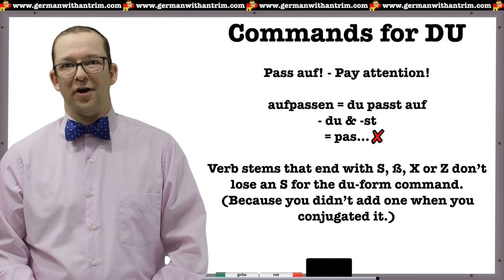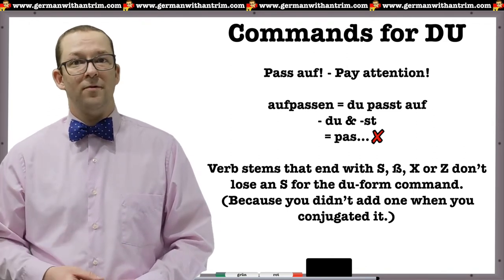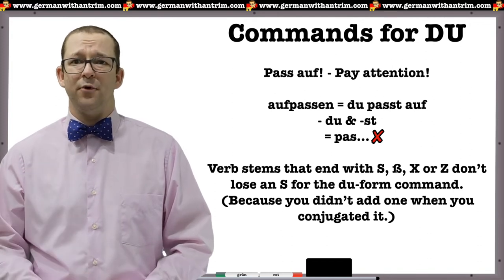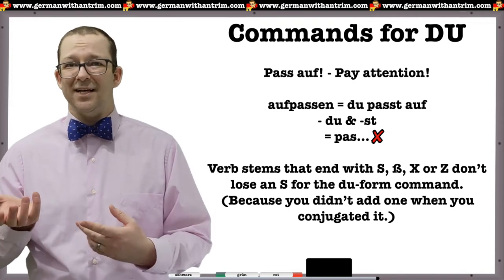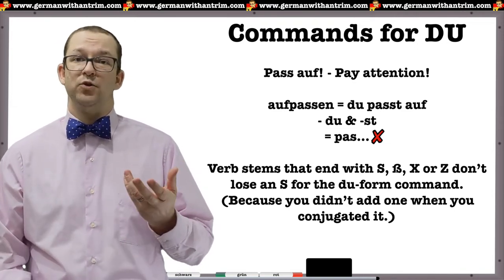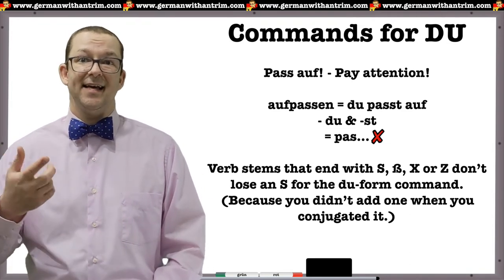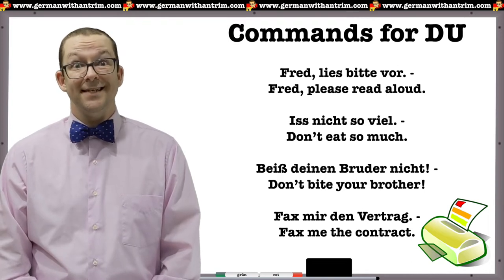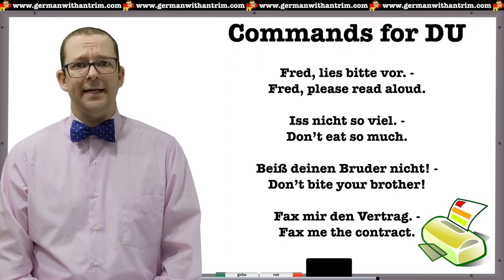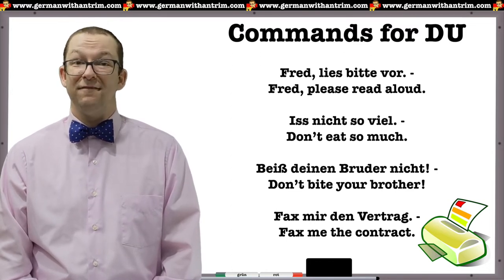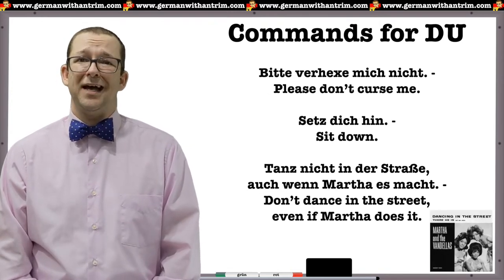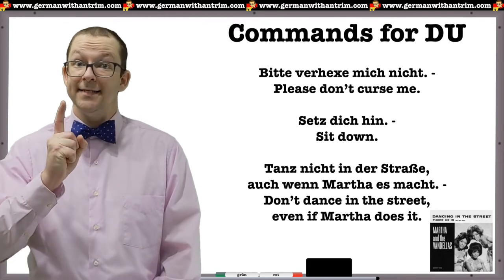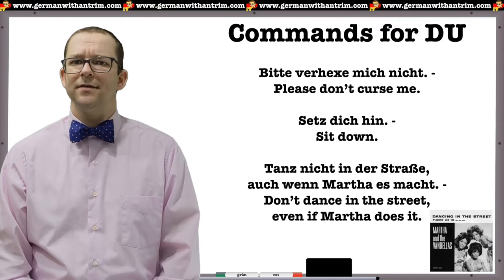In the example Pass auf, I showed another quirk. The verb is aufpassen; conjugated to Du it becomes Du passt auf. If you remove Du and ST you get Pass auf — but note both S's remain, because you didn't add an S when conjugating, so you don't remove one when making it a command. This applies to any verb stem ending in S, SZ, X, or Z. For example: Fred, lies bitte vor — Fred, please read aloud. Iss nicht so viel — don't eat so much. Beiß deinen Bruder nicht — don't bite your brother. Fax mir den Vertrag — fax me the contract. Bitte verhexe mich nicht — please don't curse me. Setz dich hin — sit down. Tanz nicht in der Straße, auch wenn Martha es macht — don't dance in the street, even if Martha does it.